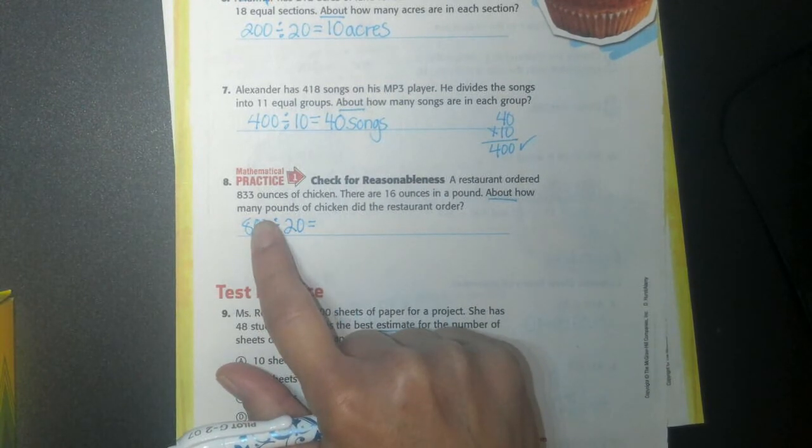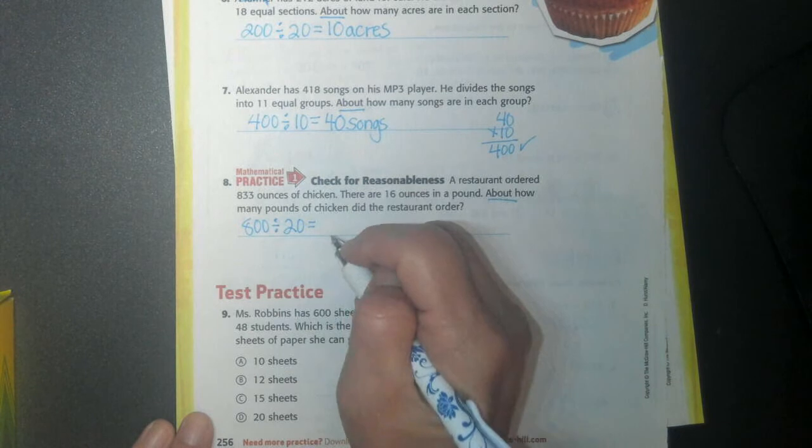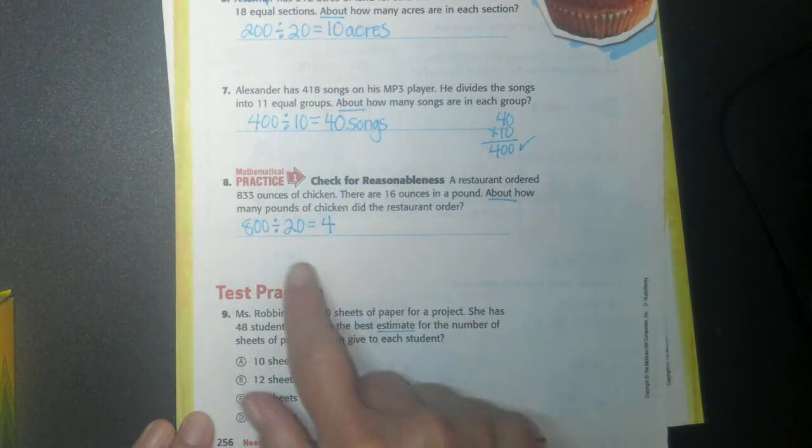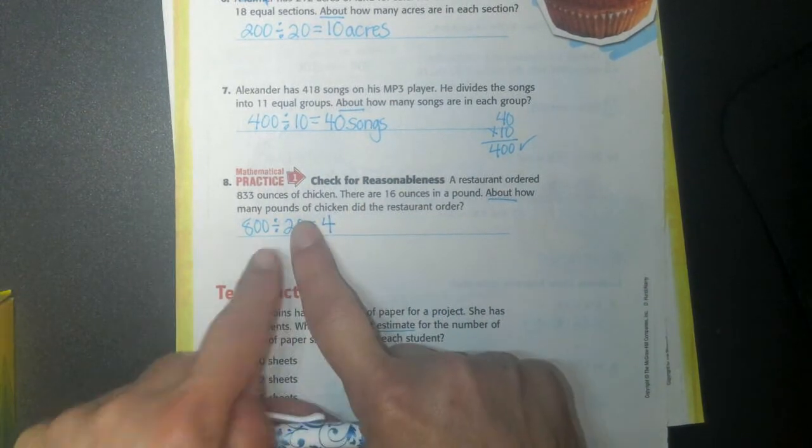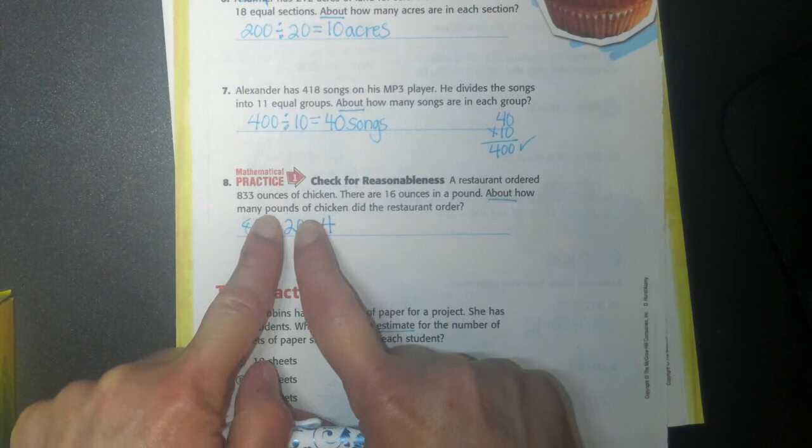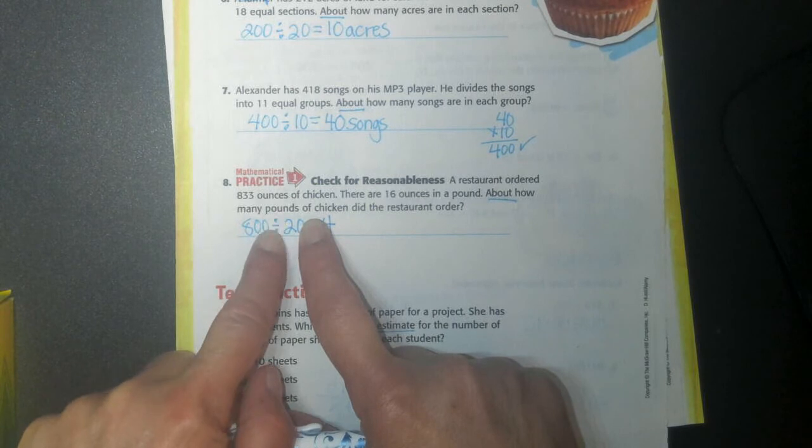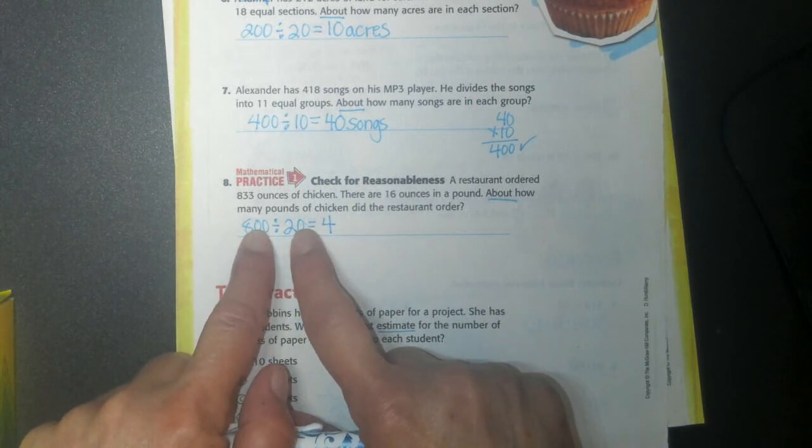So I'll estimate 800 divided by 20. How about 8 divided by 2? Do you guys know 8 divided by 2? Is 4, right? 4 times 2 is 8. So 8 divided by 2. I'm going to hide these 0s. 8 divided by 4. 8 divided by 2 is 4. So these 0s, both of them have a 0. So I won't add an extra 0 because they both have a 0.